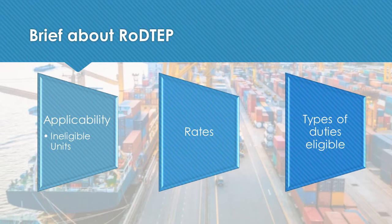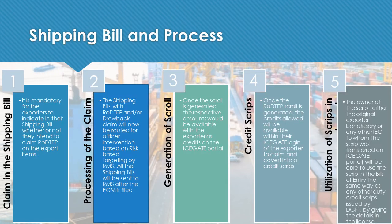Let us understand the process with respect to the claim via shipping bills and the documents required. I request CA Devendra Bansali to guide us on this aspect. In this slide, we understand the importance of the shipping bill and the process of the claim. The whole process is divided into five parts. First, the claim in the shipping bill — it is mandatory for the exporter to indicate in their shipping bill whether or not they intend to claim RODTEP on their export item.